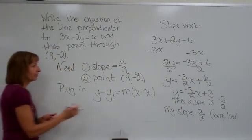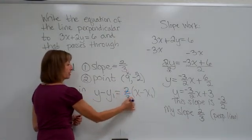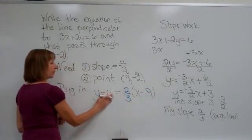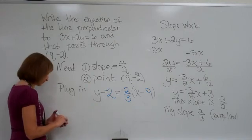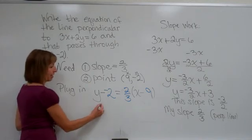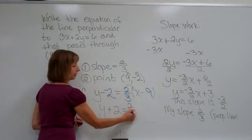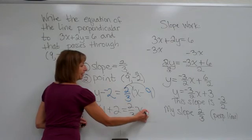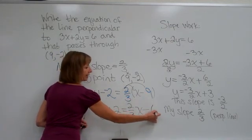Now we're going to plug those values in. My slope is 2 thirds. My x coordinate is 9. And my y coordinate is negative 2. Just simplifying that equation, we have y plus 2 is equal to 2 thirds x, and then 2 thirds times negative 9 is a minus 18 thirds, or simplifying that is a minus 6.